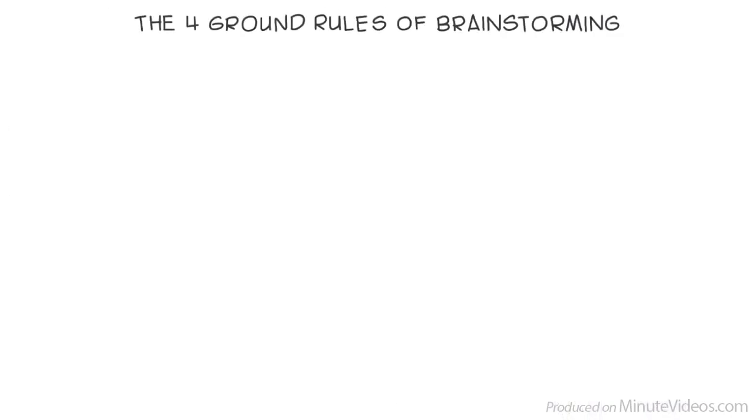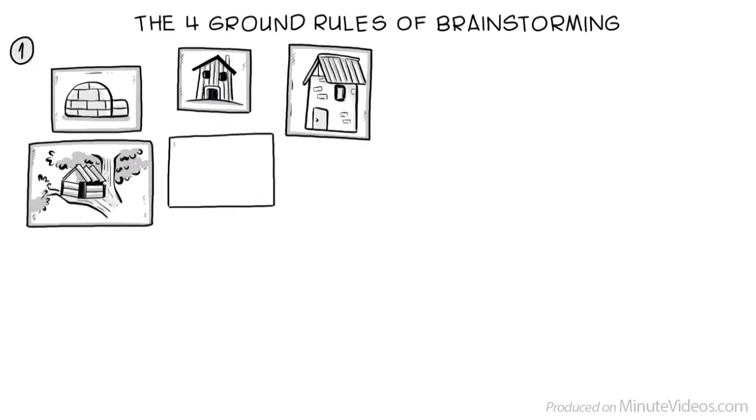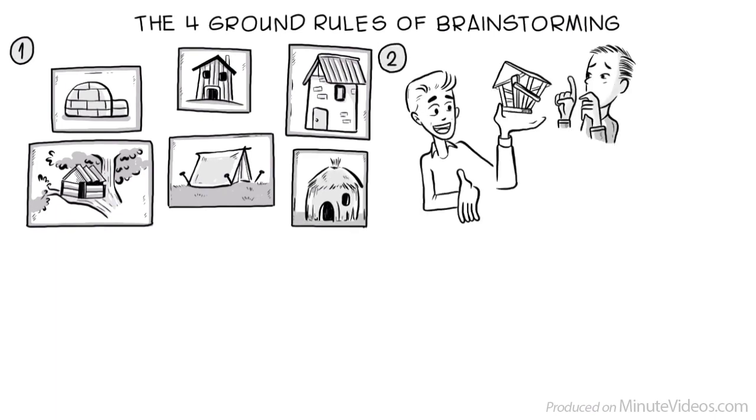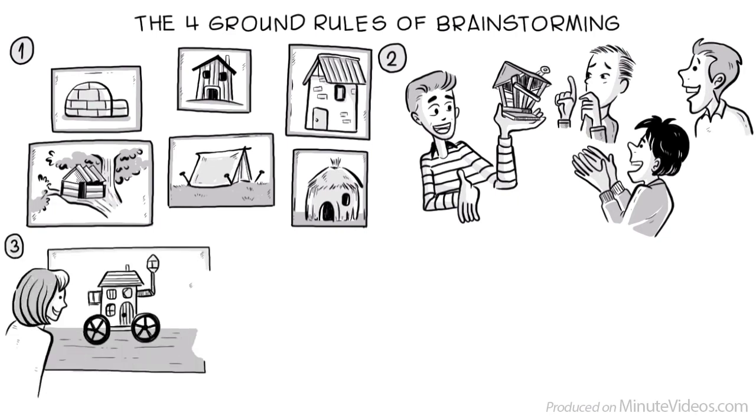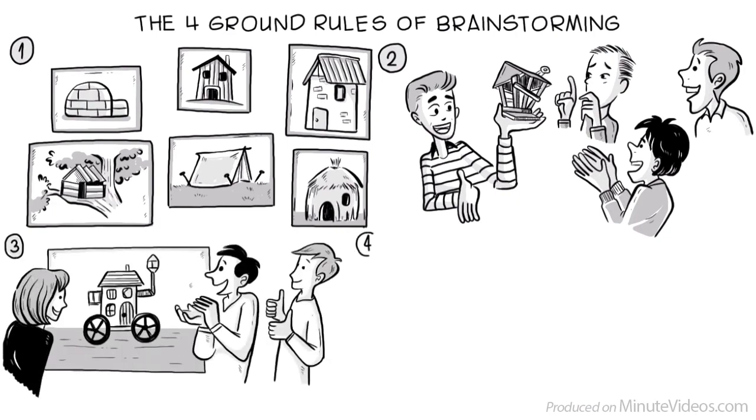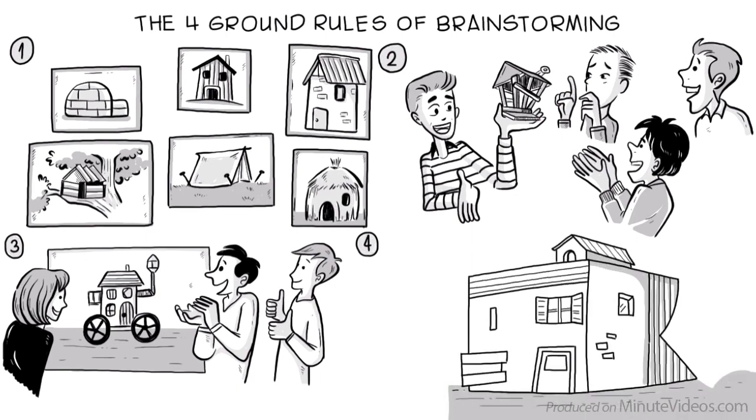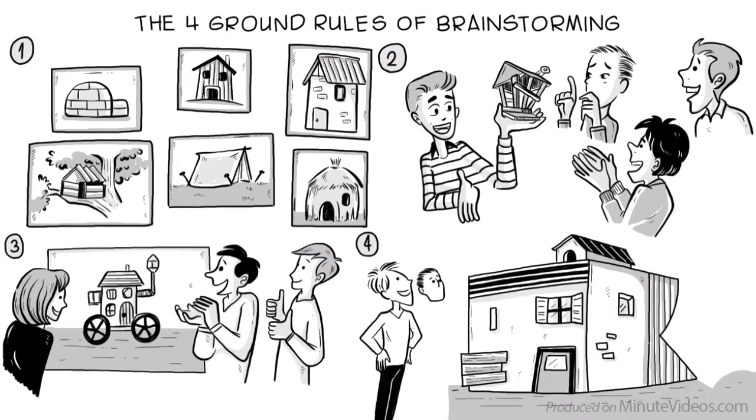Then lay out the four ground rules of brainstorming. 1. Go for quantity. Get out all the ideas, no matter how silly. 2. Withhold criticism. There are no bad ideas. 3. Welcome crazy ideas. The wilder the better. 4. Build on other people's ideas. Listen to them first and then add, yes, and…